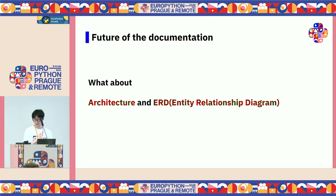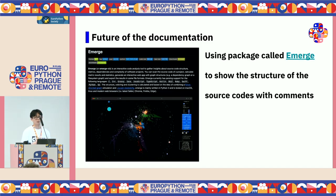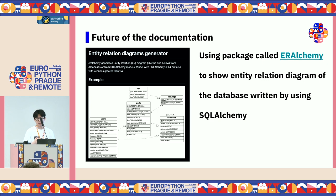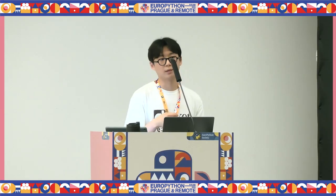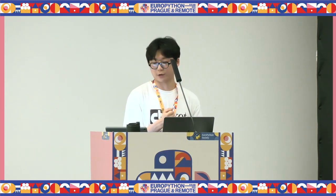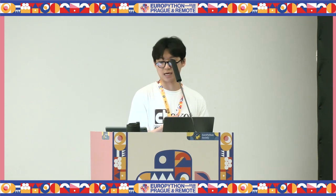Not only API documentation, we can also think about our software architecture and entity relationship diagrams for relational databases. You can use a package called Emerge to show the structure of your source code as a graph visualization of structures, metrics, dependencies, or complexity. You can also use a package called ER-Alchemy to show entity relationship diagrams of the database written with SQLAlchemy. The point is that we need to think about how we can grow our software continuously with efficient communication such as well-produced documents.